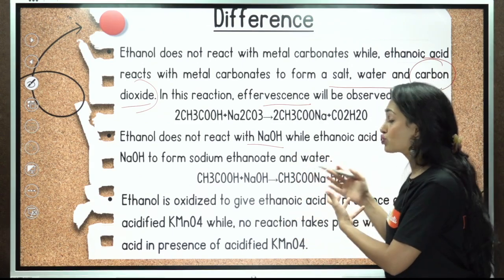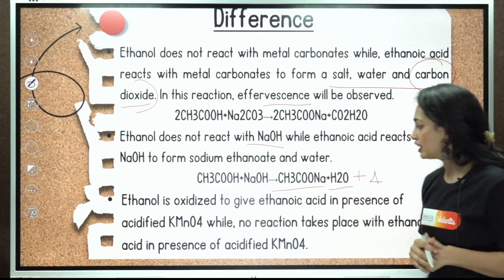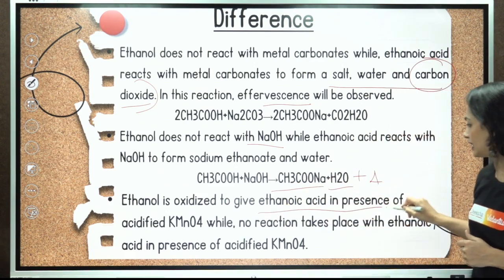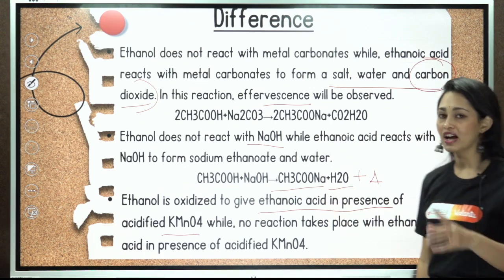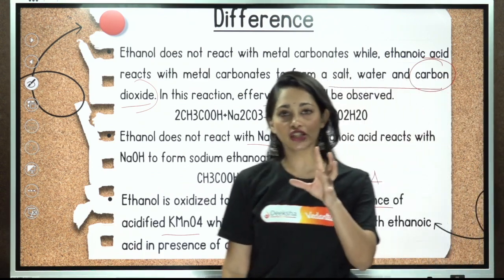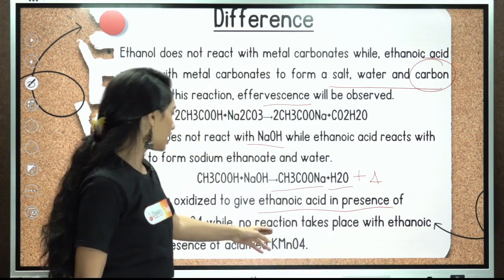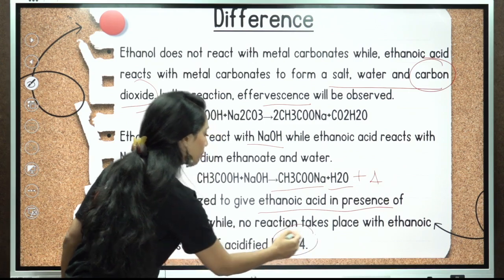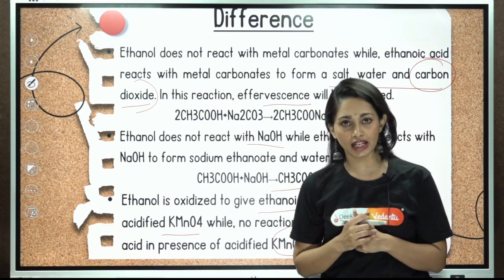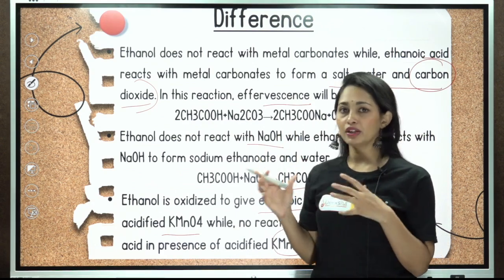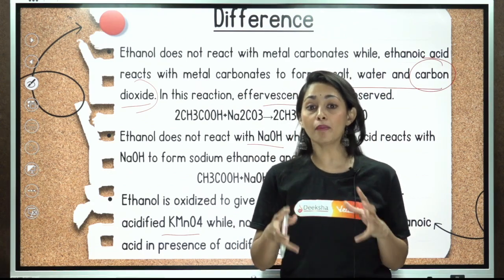Ethanol does not react with any base (MOH), but ethanoic acid — being an acid — reacts with a base and undergoes neutralization reaction to produce the respective salt, water, and heat energy. Ethanol is oxidized to give ethanoic acid in the presence of acidified KMnO4, while no reaction takes place with ethanoic acid in the presence of acidified KMnO4. These are the key differences between ethanol and ethanoic acid.